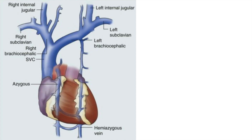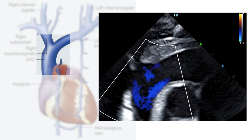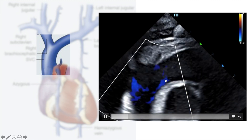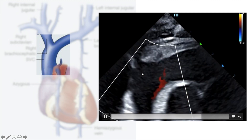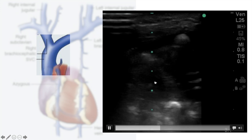For upper limb PICC lines it's a little more complicated. As a refresher on the anatomy: the left brachiocephalic joins the right brachiocephalic, and together they form the SVC, which drains into the right atrium. Here is the ultrasound view — the left brachiocephalic coming from one side, the right brachiocephalic from the other, and the SVC in the middle.